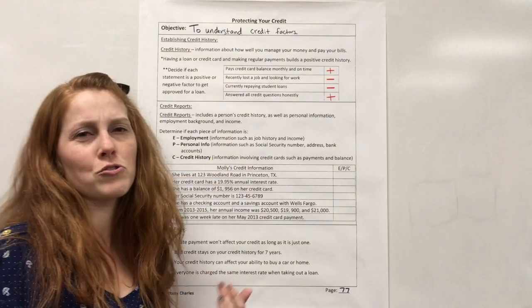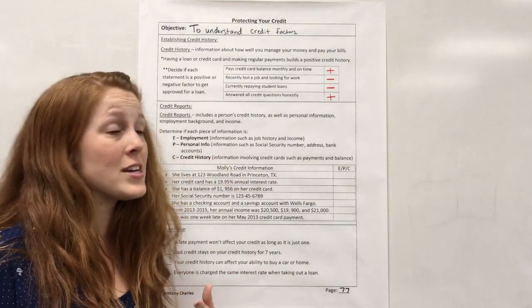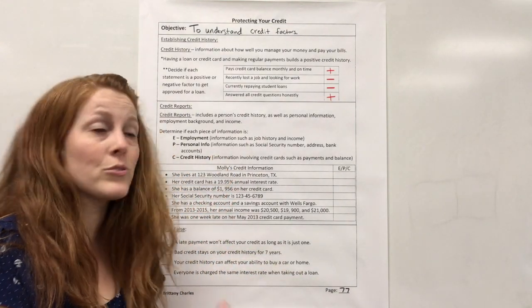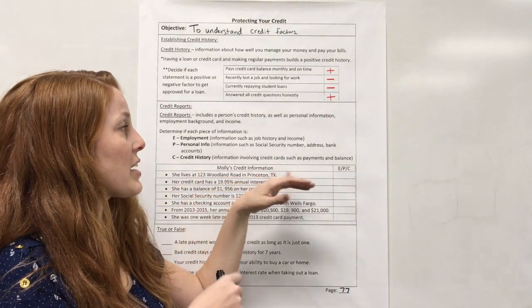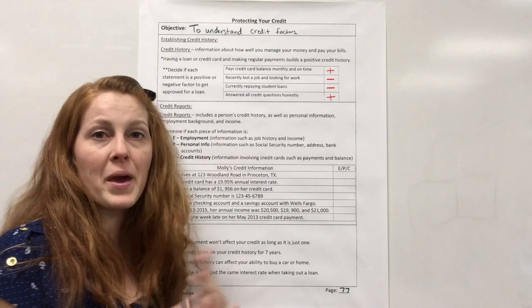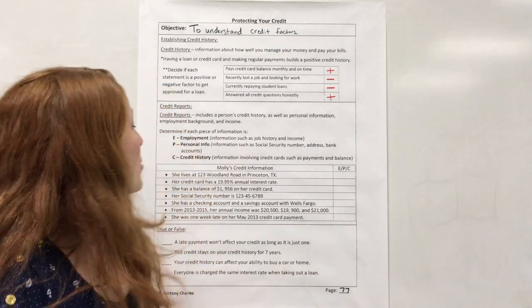Okay. Personal information would be your social security number, your address, what bank that you use. And then credit history would be things like if you have a credit card or other loans and how you're paying them and what's your balance.